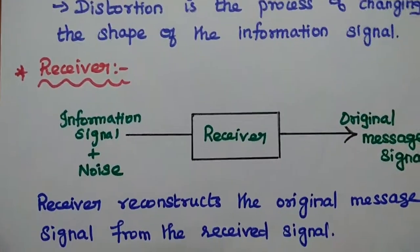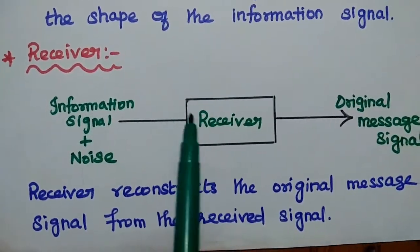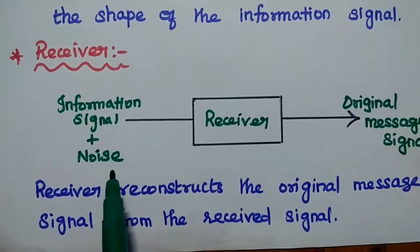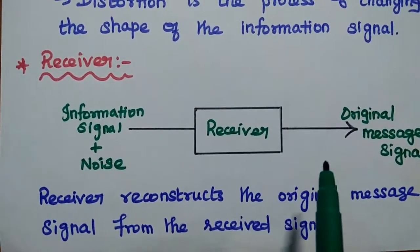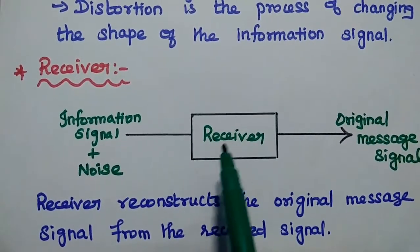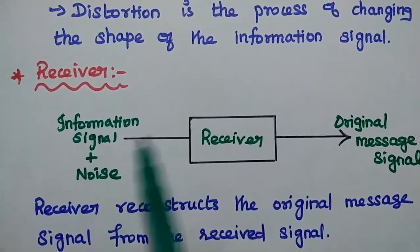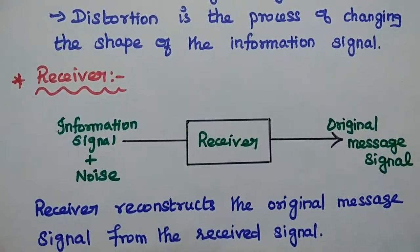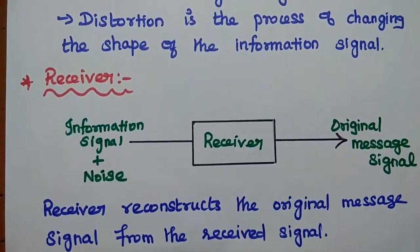The final part is the receiver. At the receiver, we receive the information signal plus the noise signal. The receiver reconstructs the original message signal from the received signal — it filters the noise and recovers the original signal. These are the important steps and processes involved in communication.